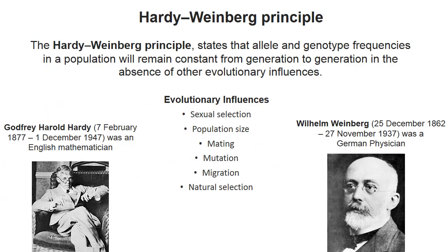Now let's talk about the Hardy-Weinberg principle. It is a very important principle in population genetics. Hardy was an English mathematician and Weinberg was a German physician. These two scientists built the Hardy-Weinberg principle, or Hardy-Weinberg law, and they state that the allele or genotype frequency in a population will remain constant from generation to generation in the absence of evolutionary influences.